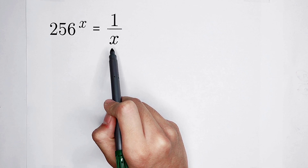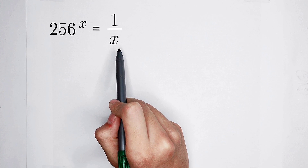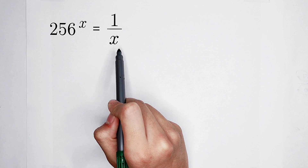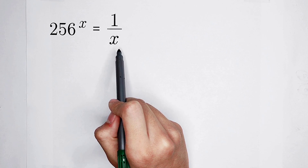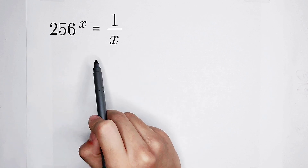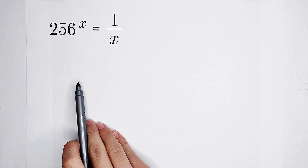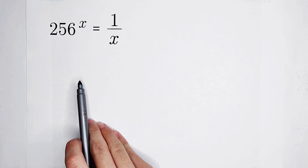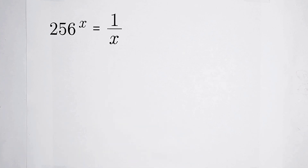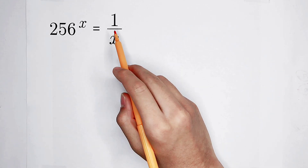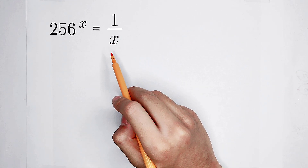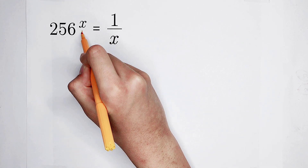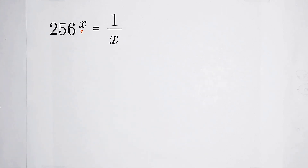So what should we do? Maybe you want to multiply by x on both sides. However, it is very, very useless. Our problem is not this 1 over x, but this x in the power of 2. We cannot bear it, so what should we do?